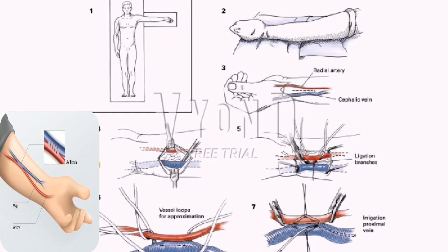The most common indication for creation of an arteriovenous fistula is renal failure requiring chronic hemodialysis. It is preferable to create a native fistula, although prosthetic material may be needed if a suitable vein is not available. The goal is to place an AV fistula prior to the patient starting dialysis. On the day of surgery, electrolytes should be checked to verify the absence of hypokalemia. Many of the patients are diabetic and close monitoring of blood glucose levels during the procedure is warranted.